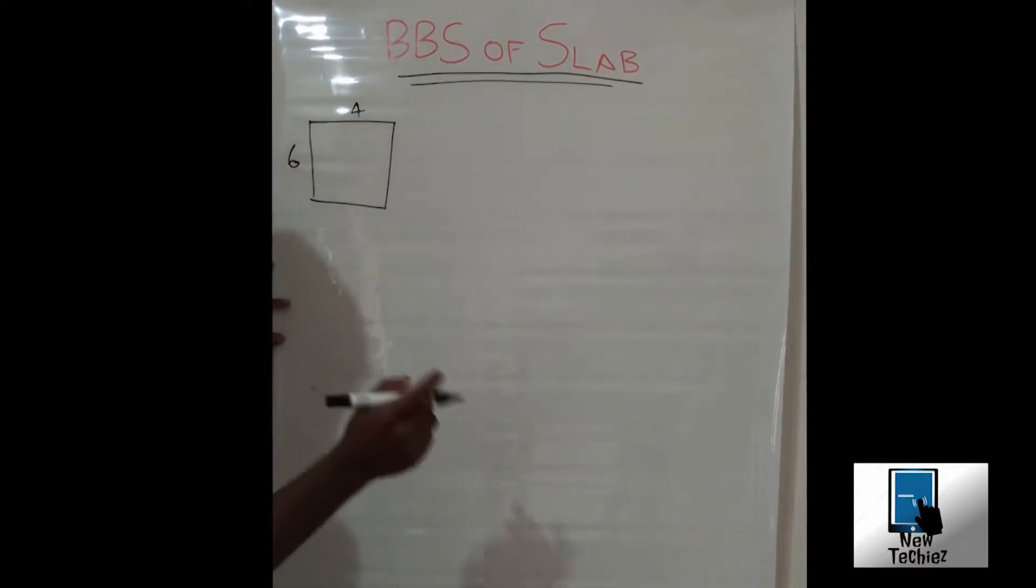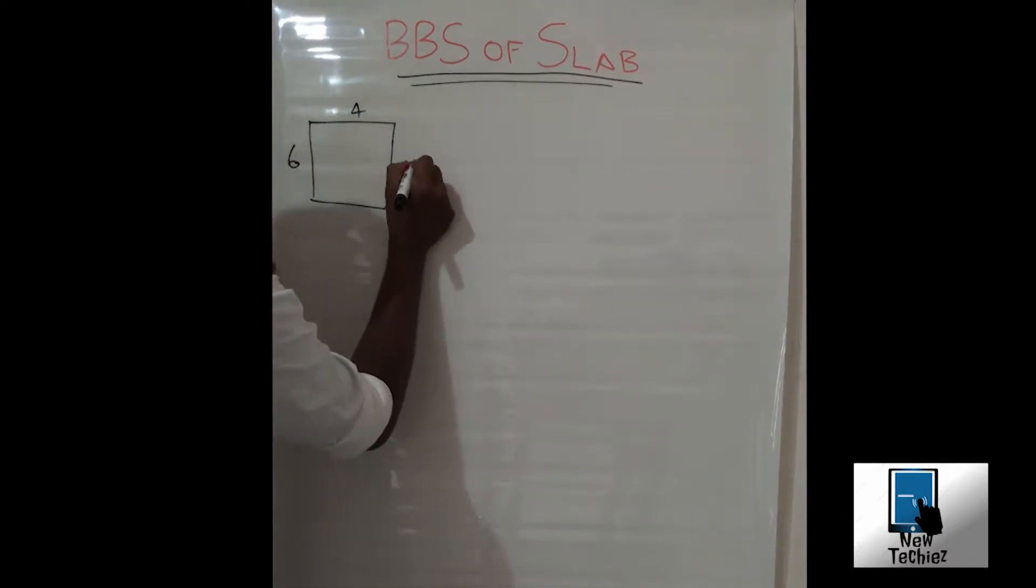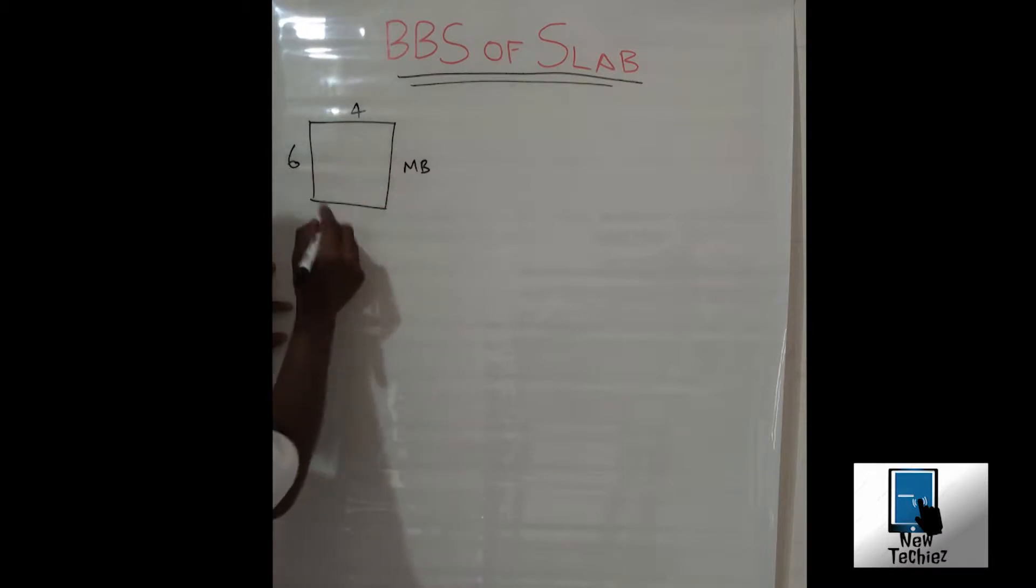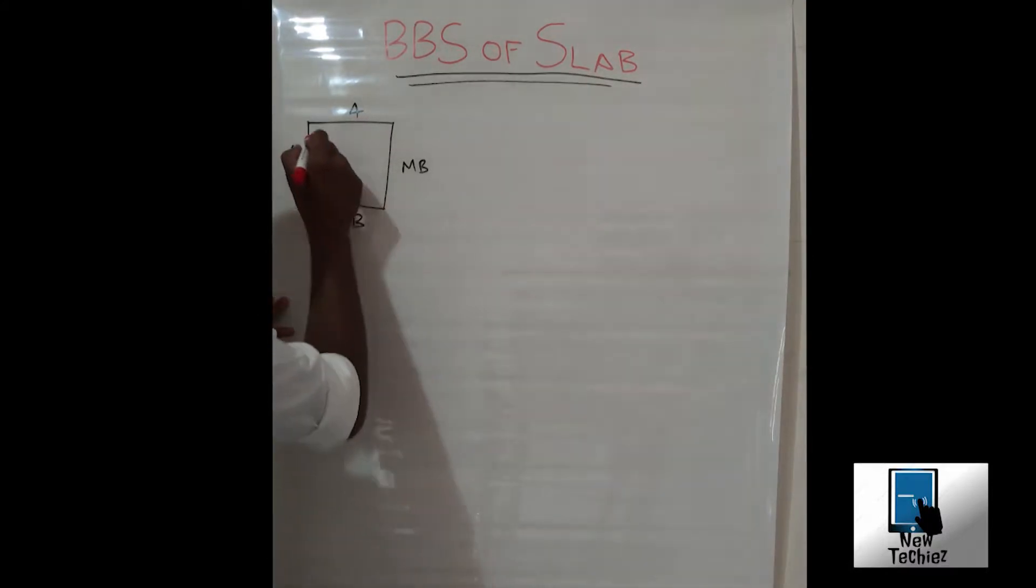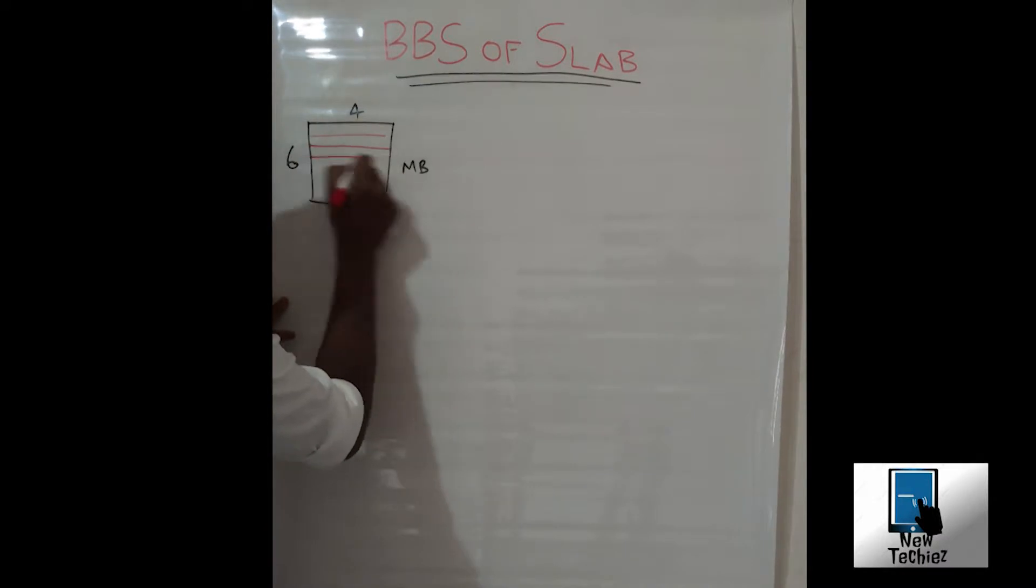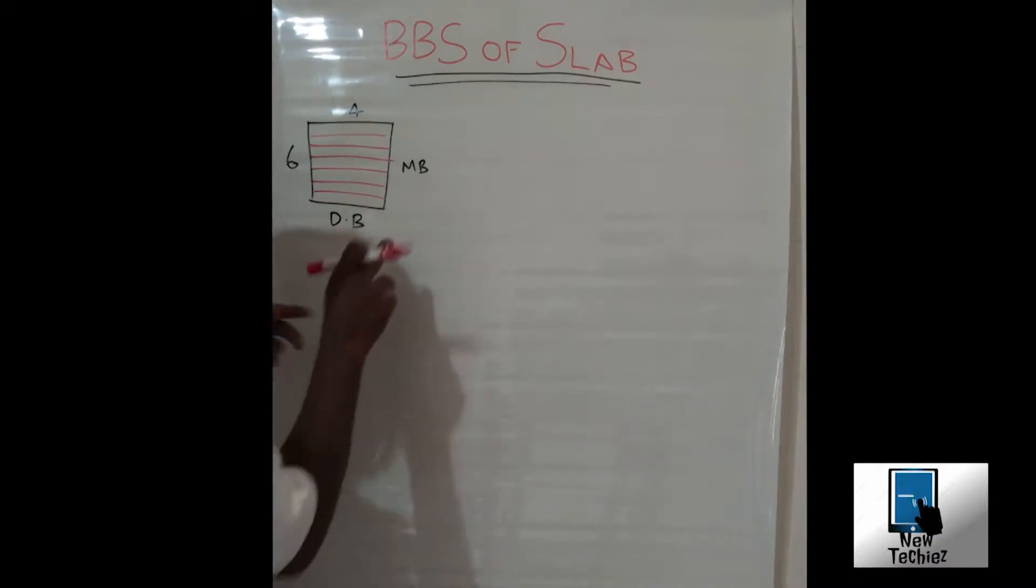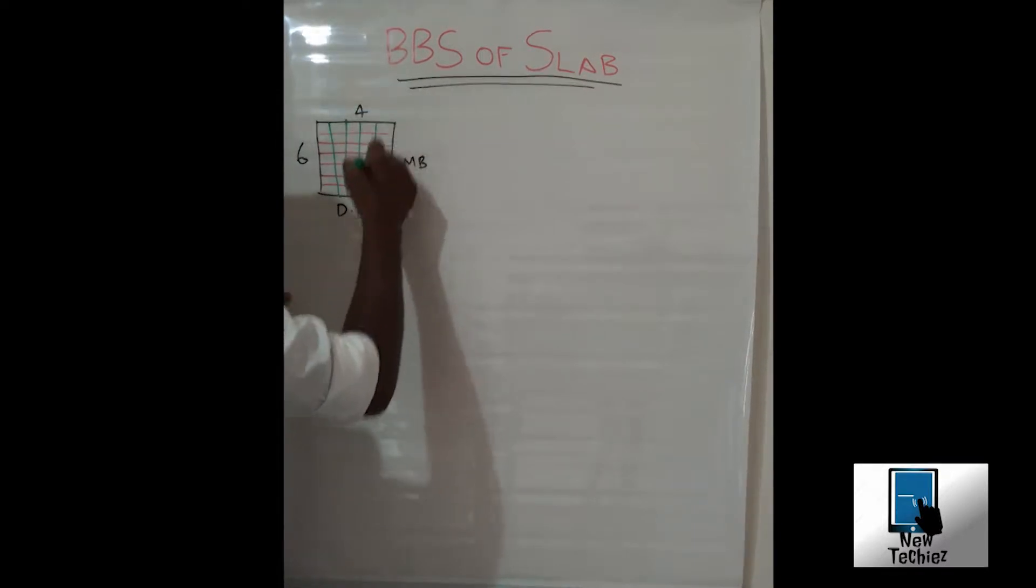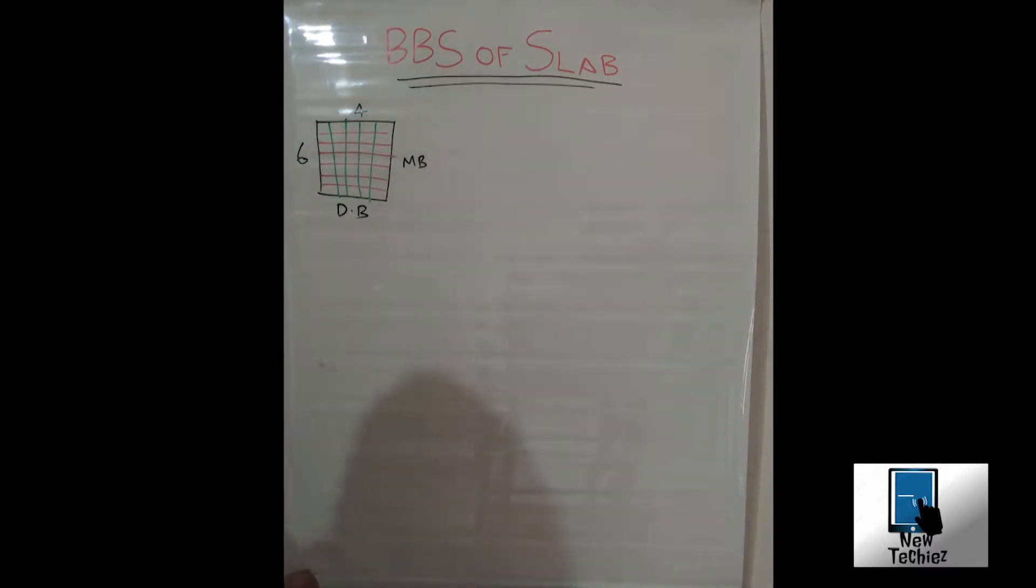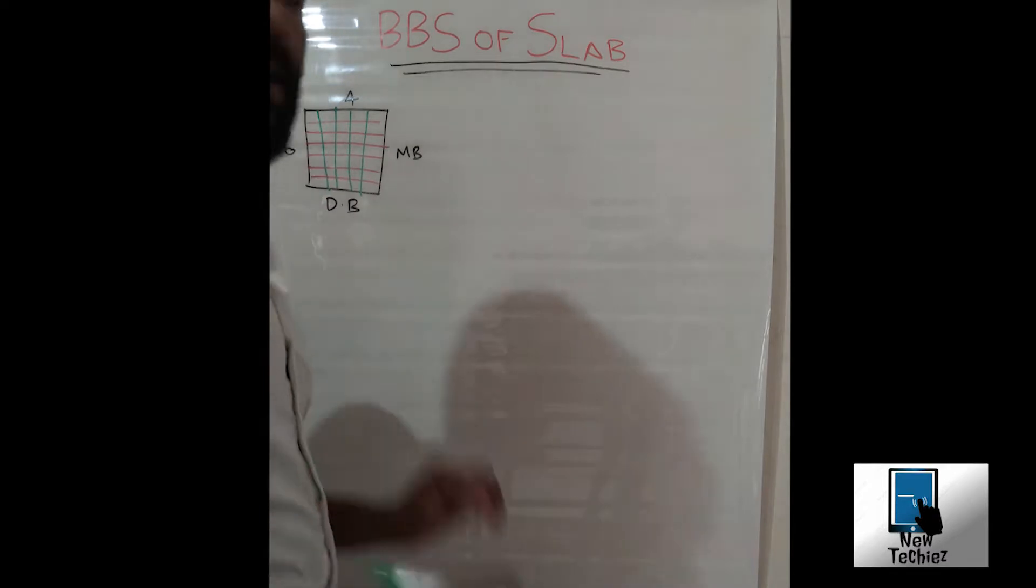This will be the main bar in the short span and this is the distribution bar. It has MB and DB. Main bar is in this direction, distribution bar is like this.